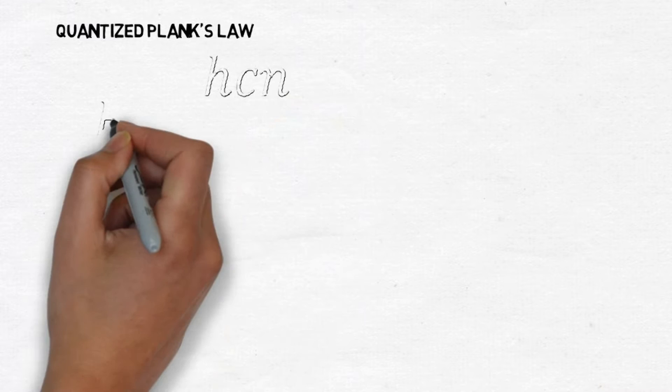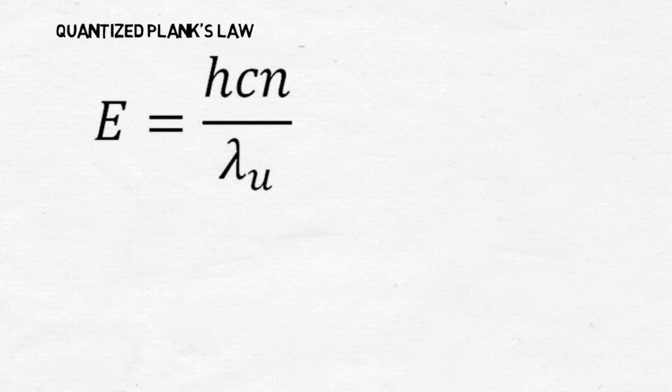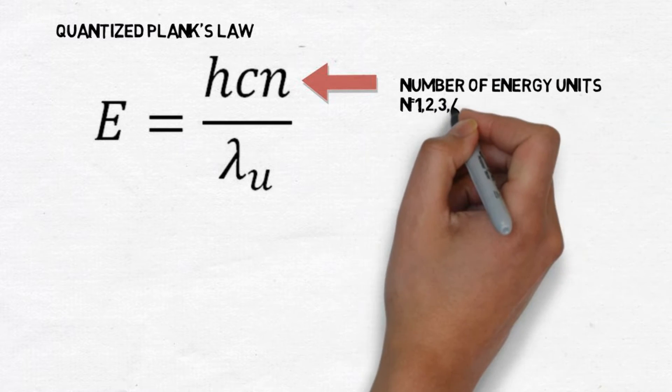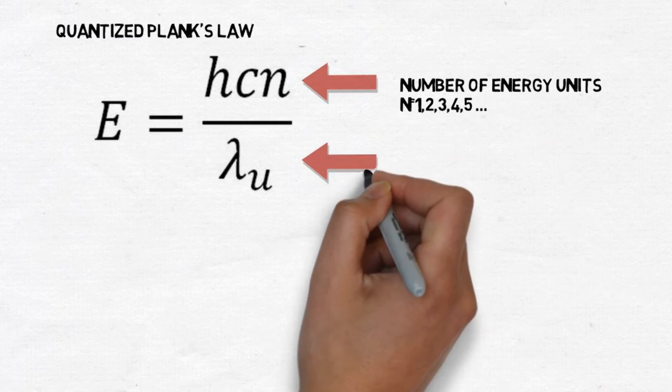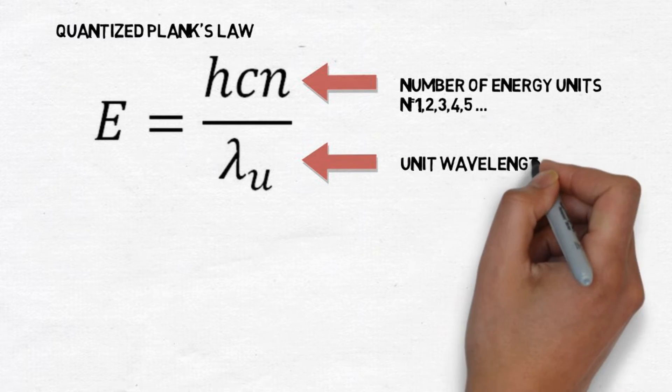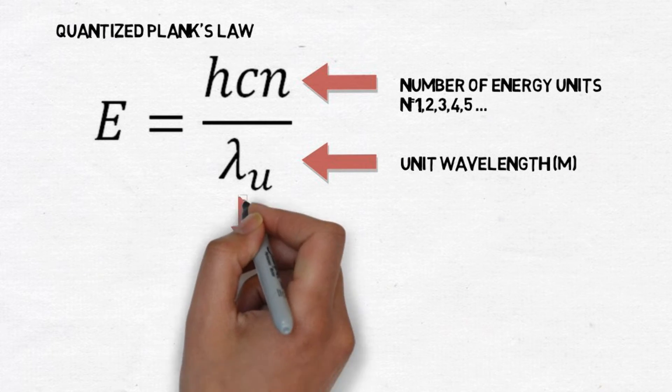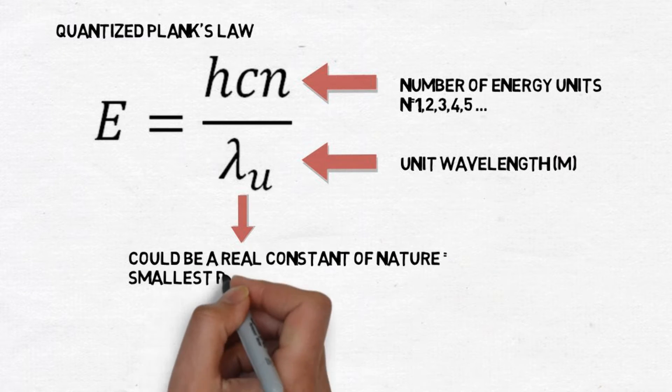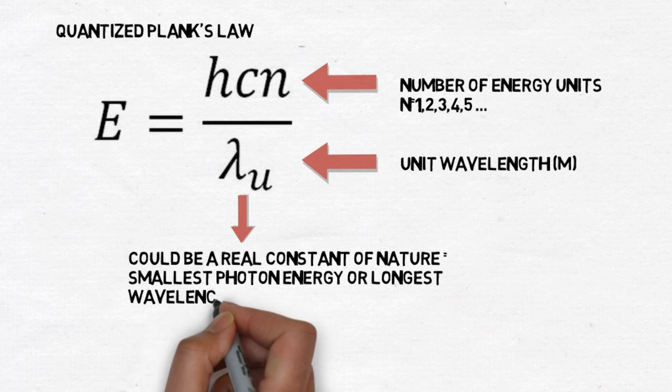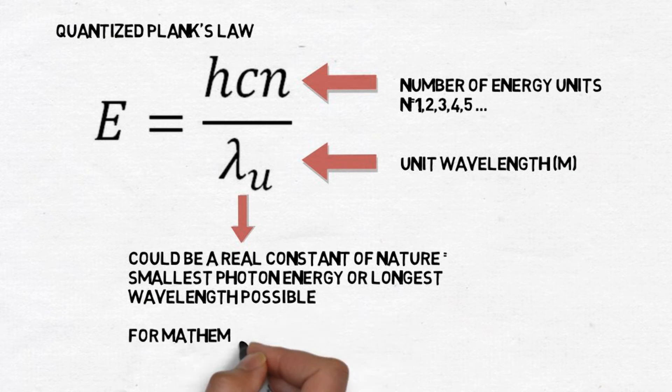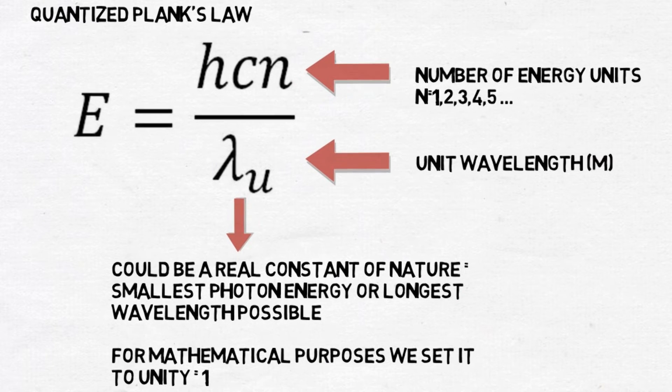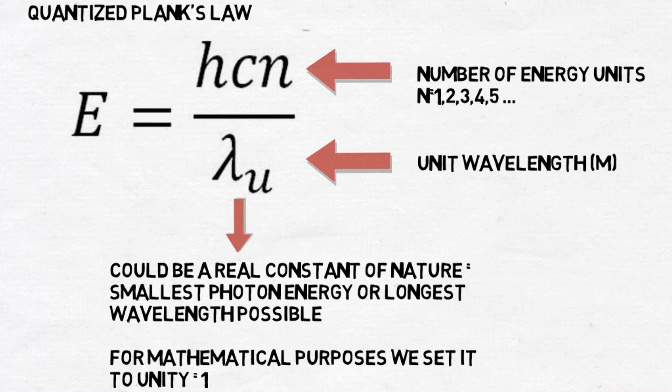In this equation, the fundamental unit wavelength must be a constant. It may be a real, undiscovered constant in nature representing the smallest energy value a photon could possibly possess. For mathematical purposes, we can just set the unit wavelength to 1 and our classical and quantized equations will all equate. Another way to look at the unit wavelength from a practical sense is to think of it as the smallest possible division of energy. So long as it is less than the accuracy of our measurements, the quantized and classical equations will all yield the same results.